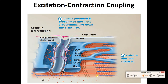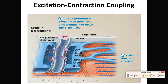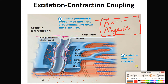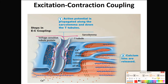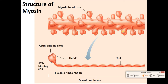We see the release here — the action potential goes down the T-tubule, interacts with proteins in there, which cause the release of calcium from the sarcoplasmic reticulum into the cytoplasm. That's when the calcium can then interact with the proteins of contraction. Those two proteins of contraction are actin and myosin. The calcium is somehow going to interact with these proteins and get them to cause the muscle cell to contract.